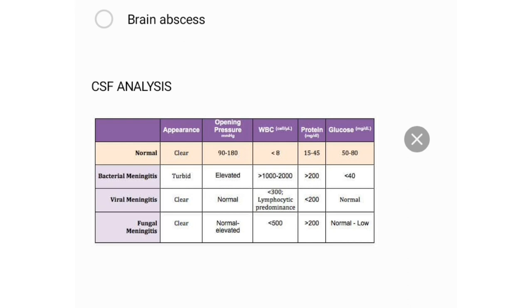In bacterial meningitis, the appearance is turbid, opening pressure is elevated, WBC is more than 1000–2000, protein is more than 200, and glucose is less than 40. In viral meningitis, the appearance is clear, opening pressure is usually normal, WBC is less than 300 with lymphocytic predominance, protein is less than 200, and glucose is normal.